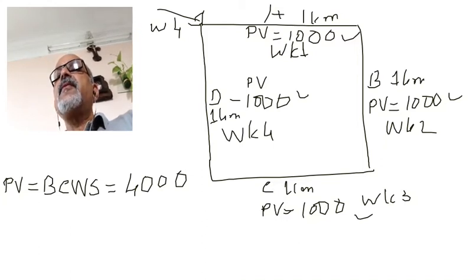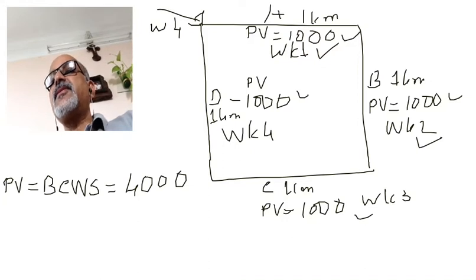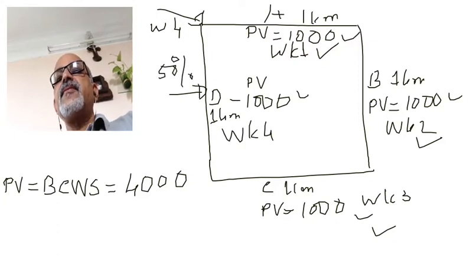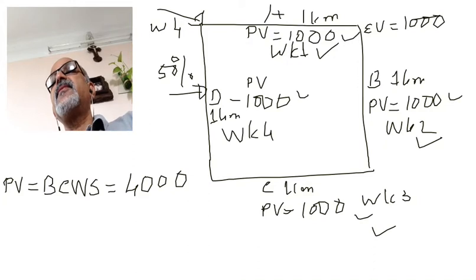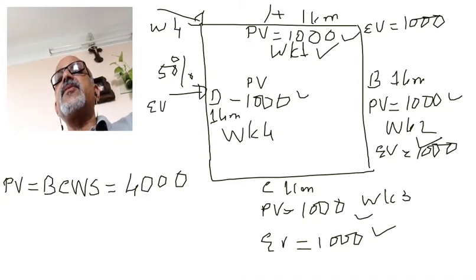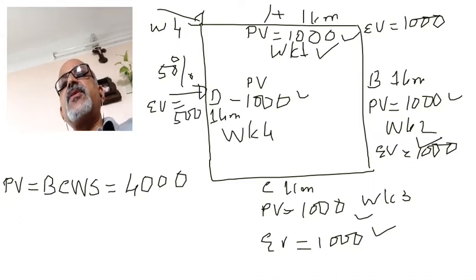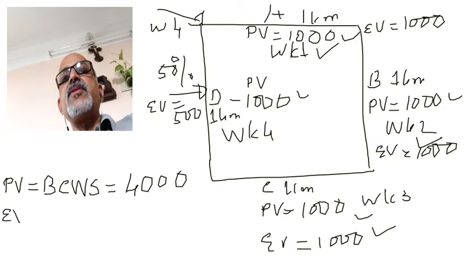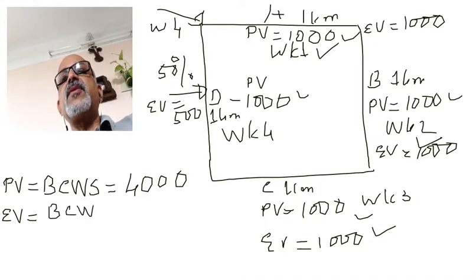Side A is done, Side B is done, Side C is done. Side D, however, is only 50% completed. So the earned value for Side A is $1,000, Side B is $1,000, Side C is $1,000, and Side D's earned value is 50% of $1,000, which is $500. The cumulative earned value, also known as Budgeted Cost of Work Performed (BCWP), is $3,500.